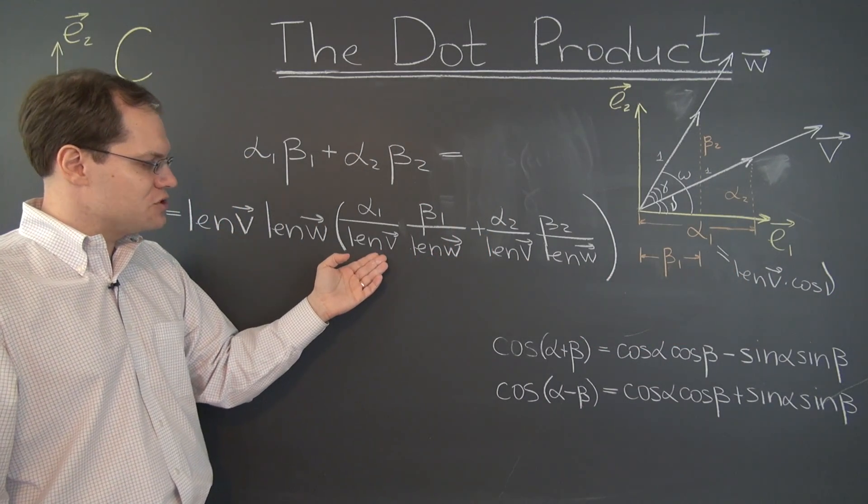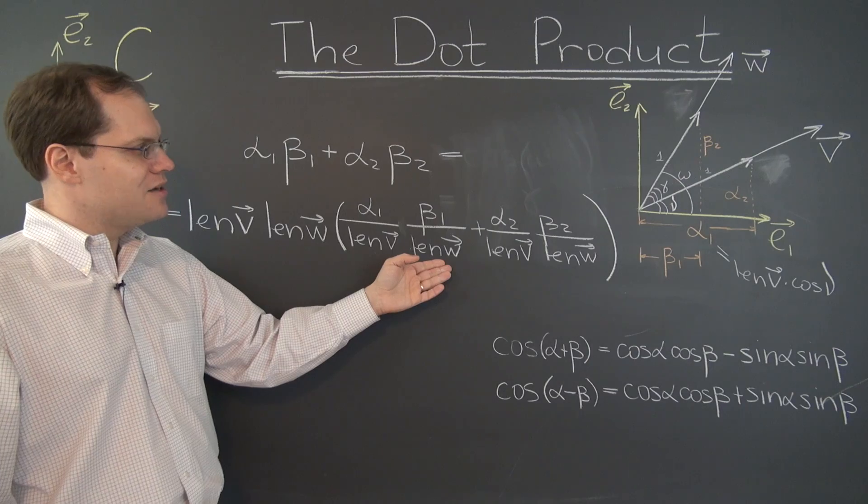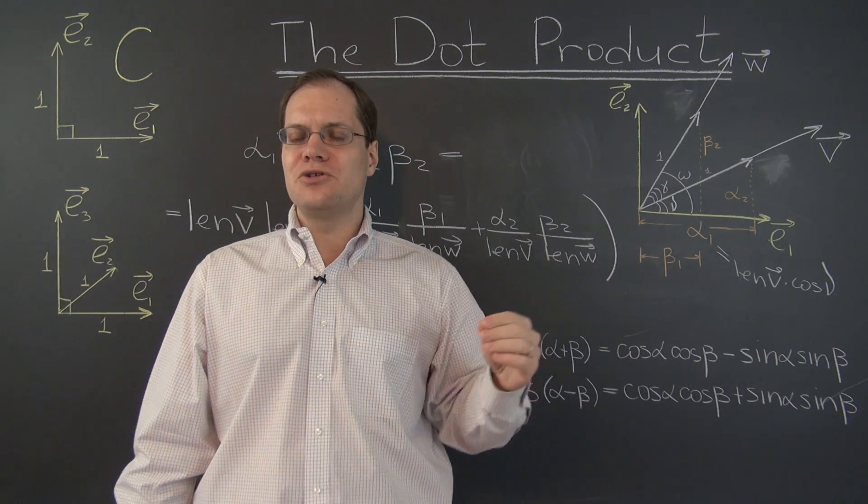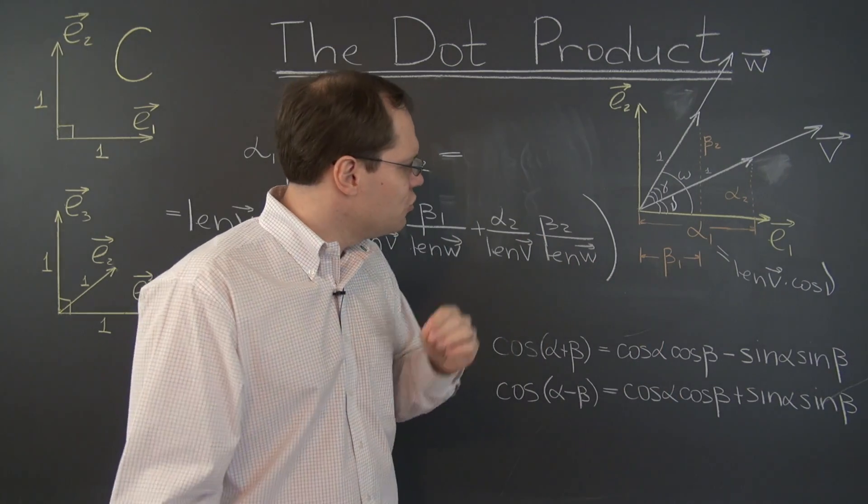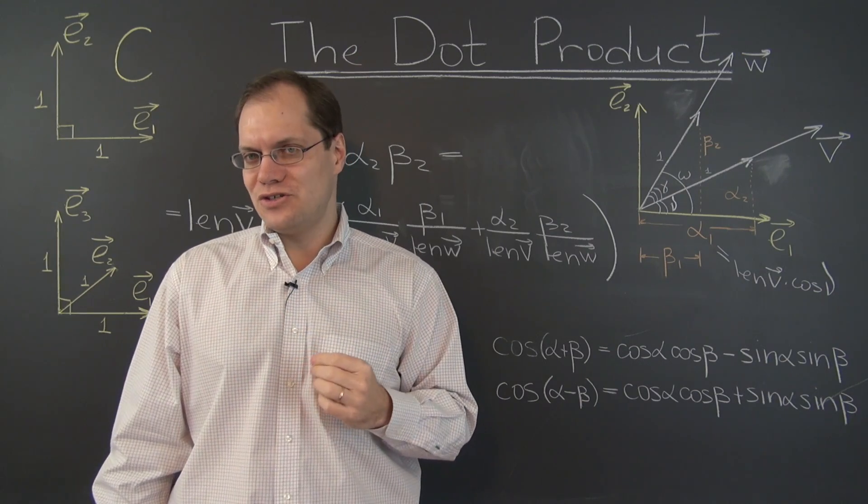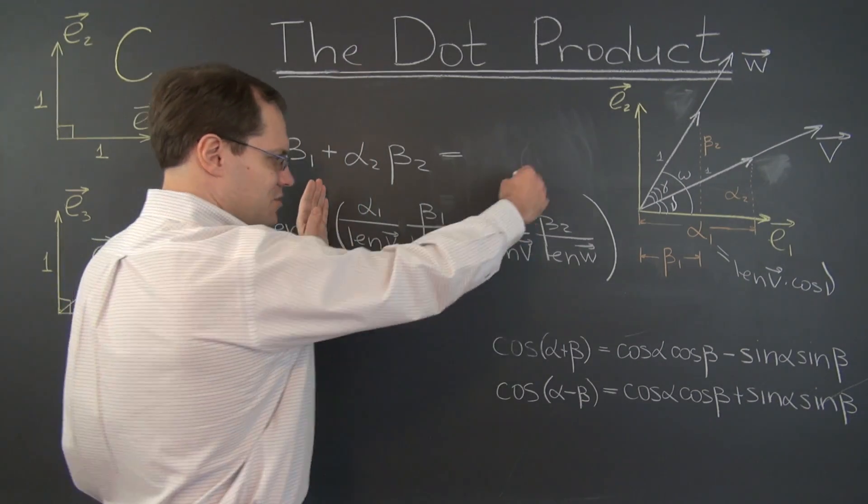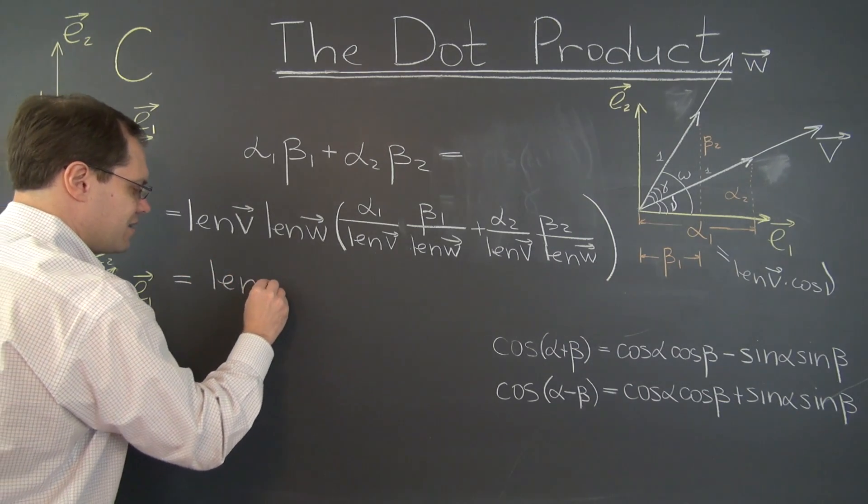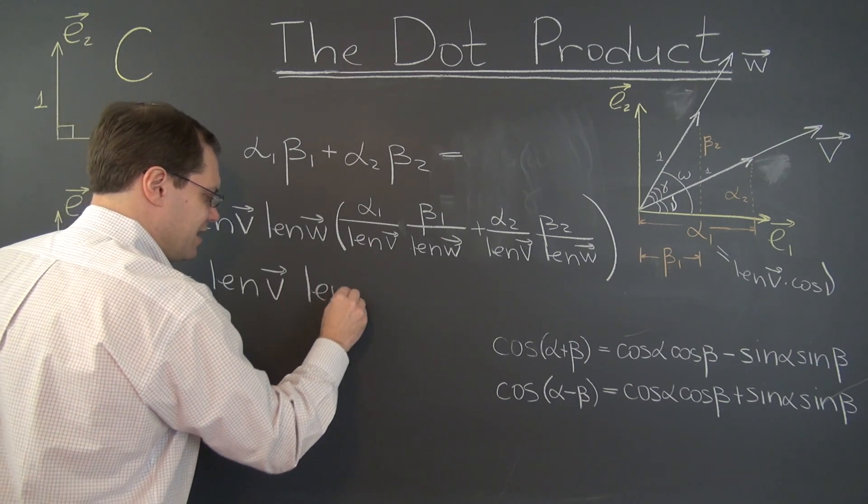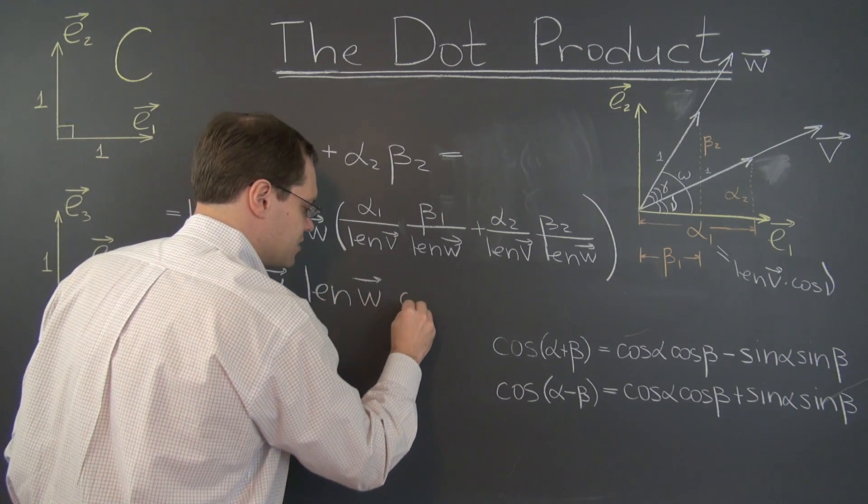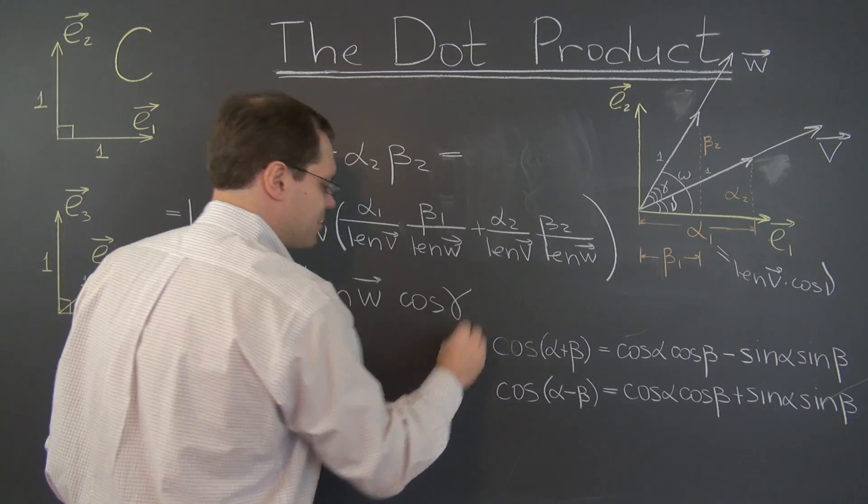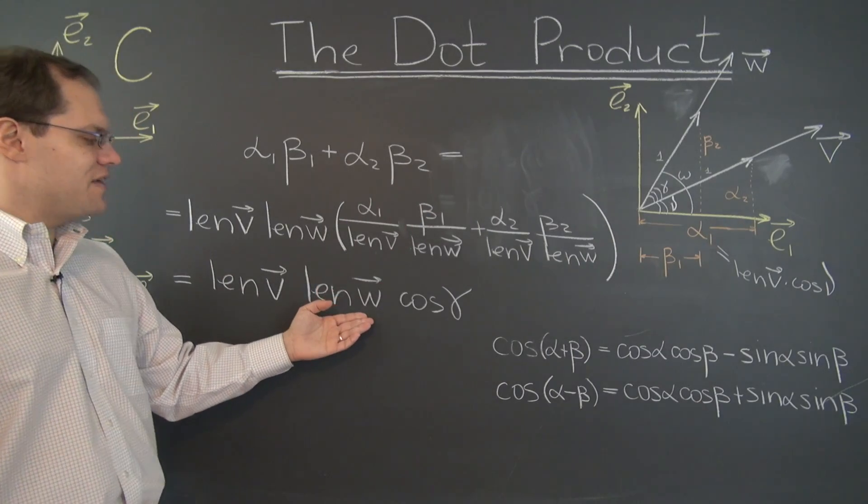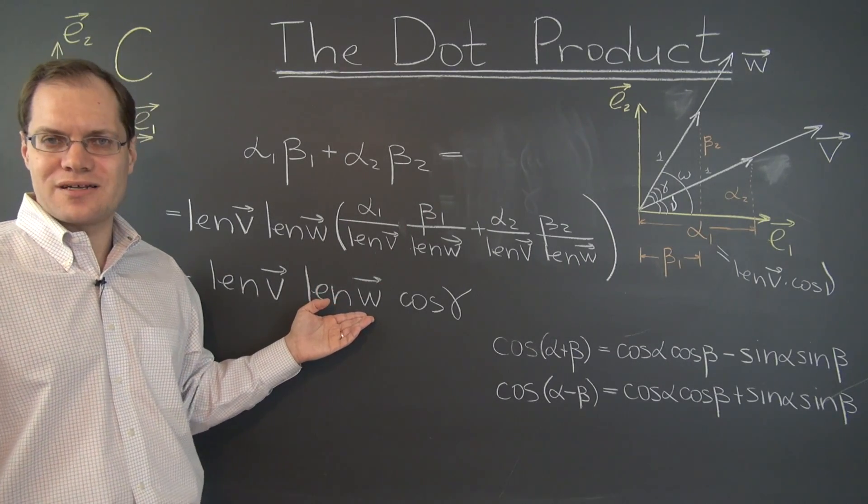And now in parentheses, we have exactly what we had before because alpha one divided by length of V. Alpha one divided by length of V is just cosine nu. And so forth. So now in parentheses, we have cosine nu, cosine omega, plus sine nu, sine omega. Use this formula. You get cosine of nu minus omega or omega minus nu, which is the same as gamma. So this is simply cosine of gamma. And we have length of V times length of W times cosine gamma. And the proof is complete. This expression does evaluate to what we define the dot product to be.